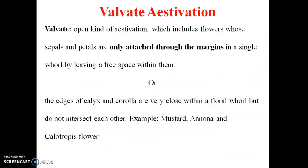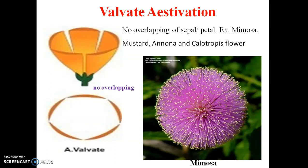The first type is Valvate Estivation. Valvate estivation is an open kind of estivation where the flower's sepals and petals are only just touching through the margin — they do not overlap each other. The edges of the calyx and corolla members meet but do not intersect. Examples include Mustard, Annona, and Calotropis flowers. You can see in the diagram that the sepals or petals do not overlap — only the margins touch.